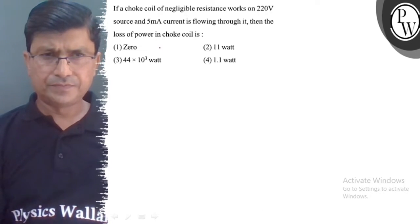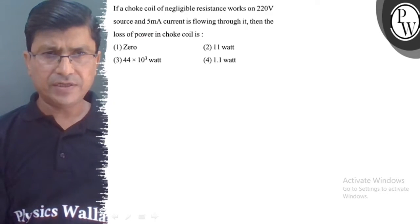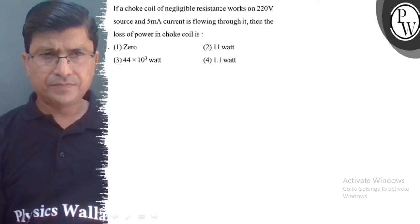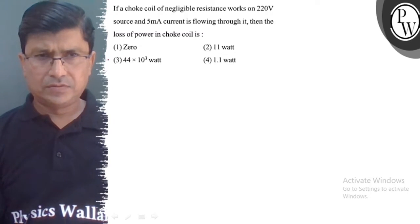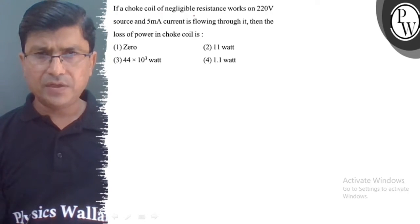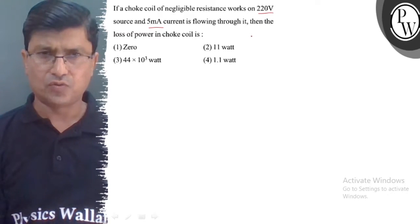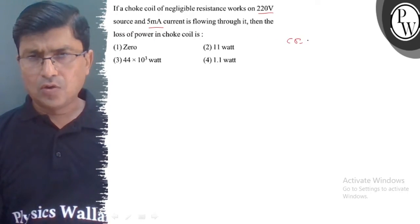Hello, let's understand the question. If a choke coil of negligible resistance works on 220V source and 5mA current is flowing through it, then the loss of power in the choke coil is. If we get the value of cos phi, then the value of R by Z is equal.